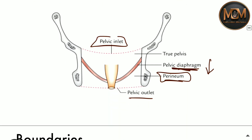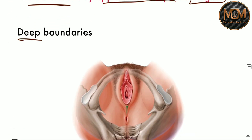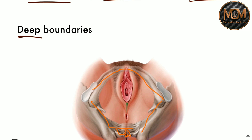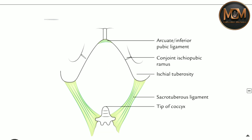These are the superficial boundaries of the perineum. Now for the deep boundaries — if we remove the skin, you can see the bones and ligaments. This is the sacrum and this is the coccyx. You can see the ischial ramus and the ischial tuberosity. Anteriorly is the ischiopubic ramus and the arcuate inferior pubic ligament.